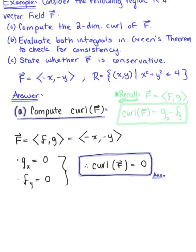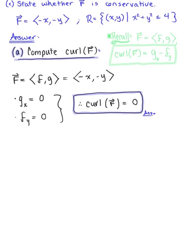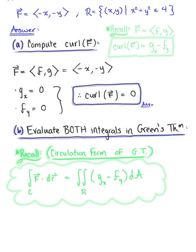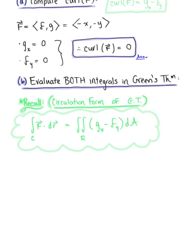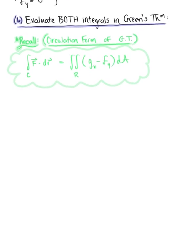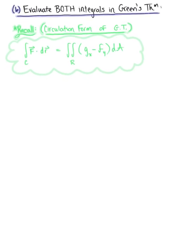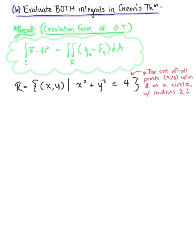Part B is asking us to evaluate both integrals in Green's theorem — the line integral form and the double integral form. In both cases, we need to identify what region R looks like. R in the xy-plane is the set of all ordered pairs (x, y) such that x² + y² ≤ 4, which means we have all ordered pairs within and on a circle of radius 2.